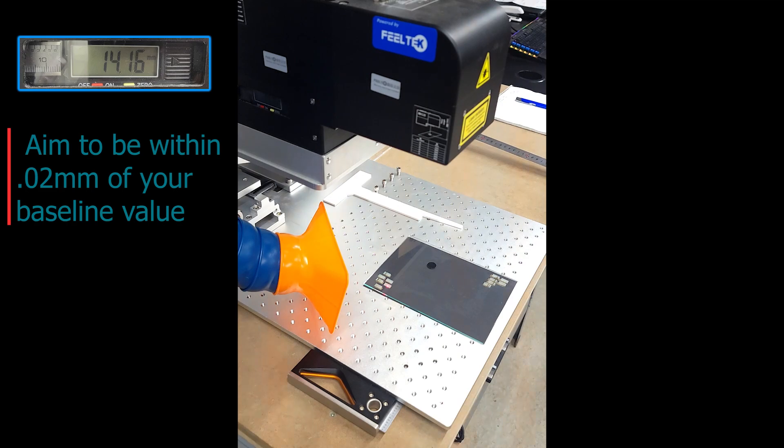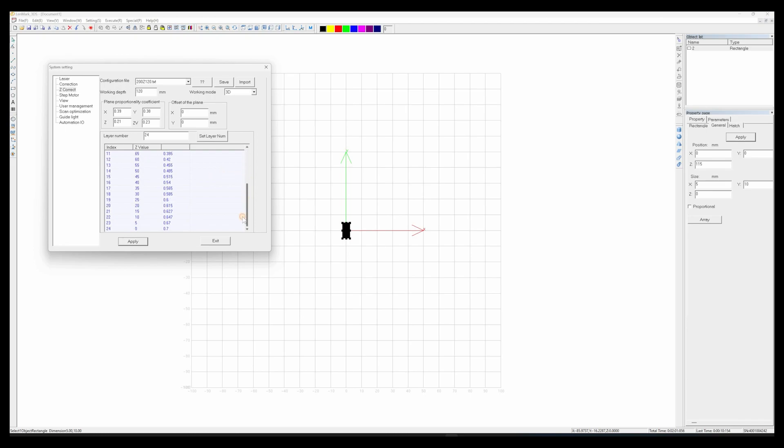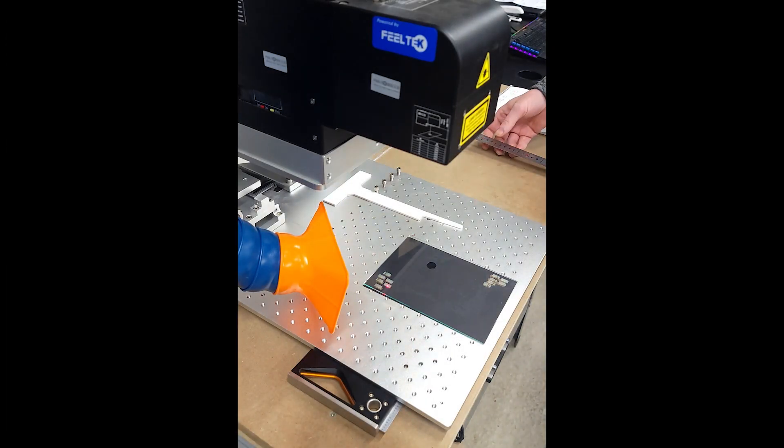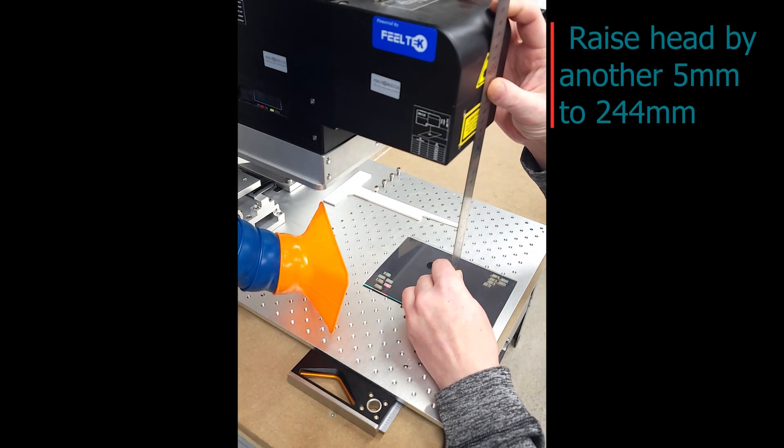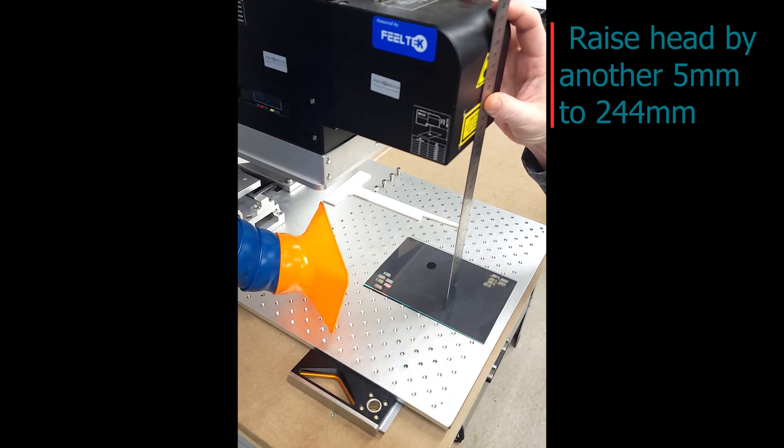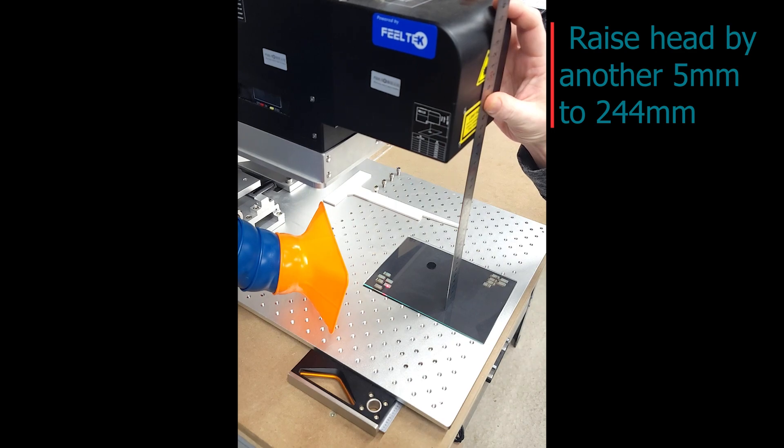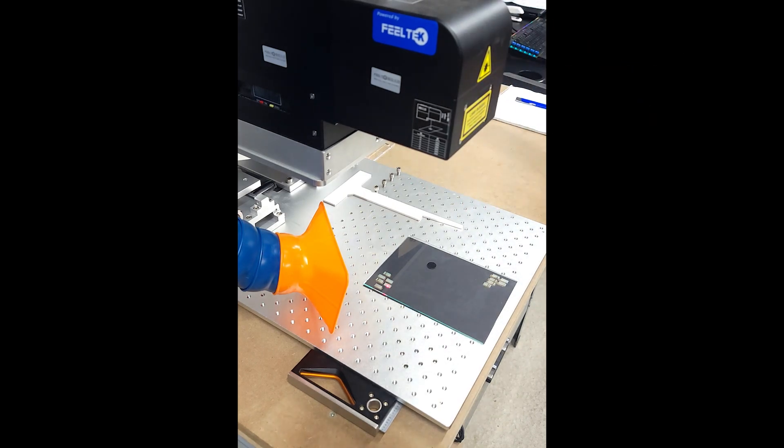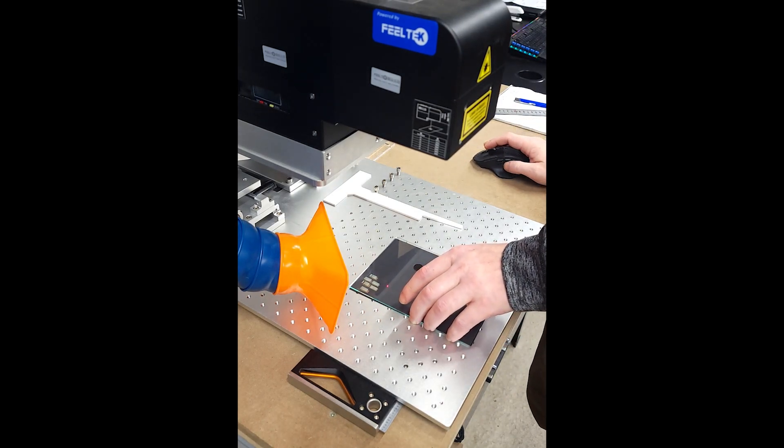And now we're just going to continue going through the rest of the steps. Every single value, you'll be doing this 24 times. So let's do it again. We're going to move to 110. We're going to lower our SVG also to 110. We're going to head back to the laser and we're going to raise it another five millimeters. This time we'll be at 244. Here we are, 244. And then we're going to run it again.